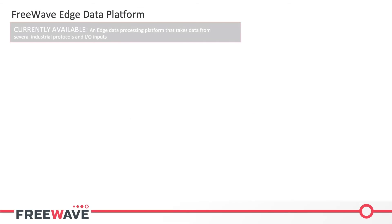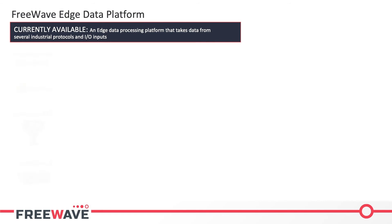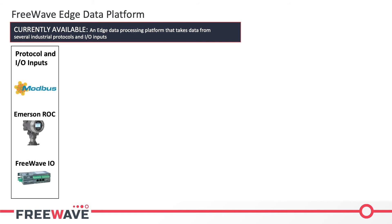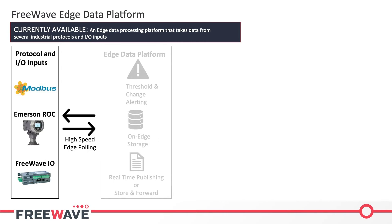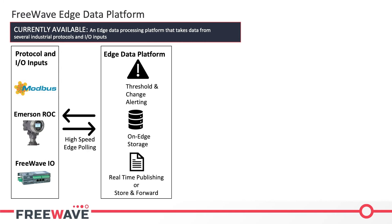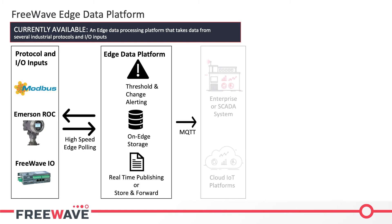FreeWave Edge is an edge data processing platform that takes data from several industrial protocols and IO inputs. It does high-speed edge polling, running on the Zoom series and the new Fusion series from FreeWave. It provides threshold and change alerting, on-edge data storage, and real-time publishing and store-and-forward publishing via MQTT and other methods to the enterprise system, the SCADA system, or the cloud of your choice.